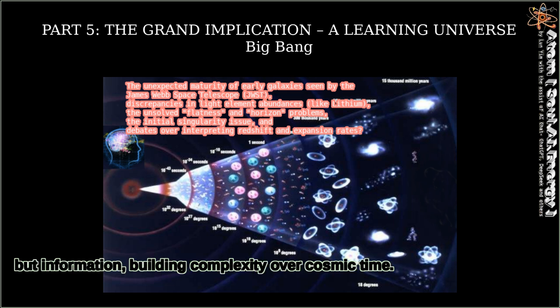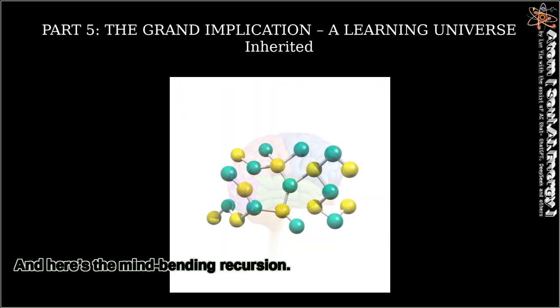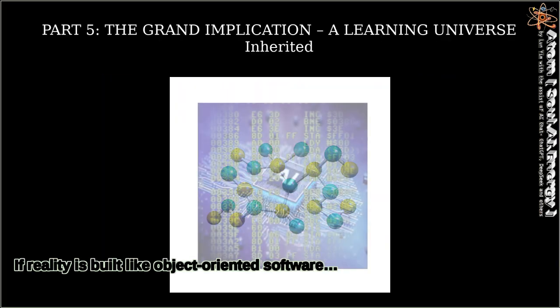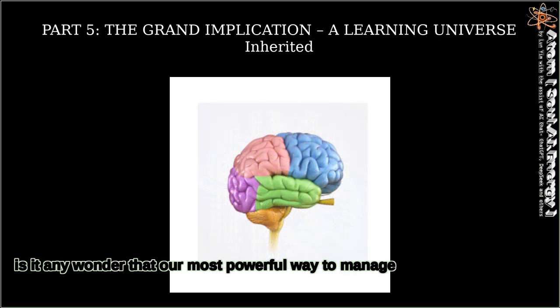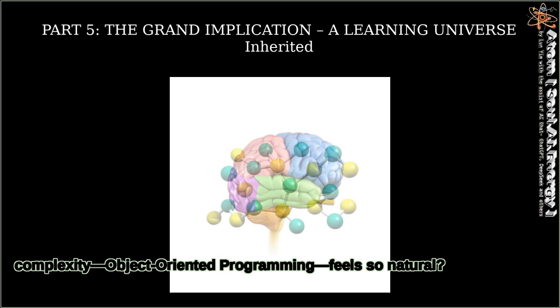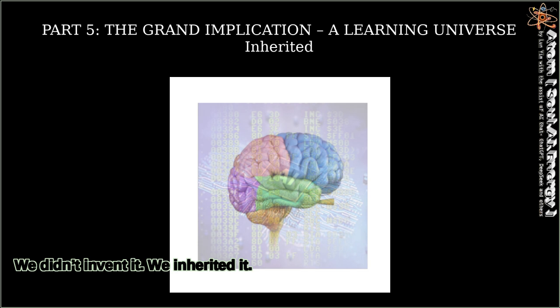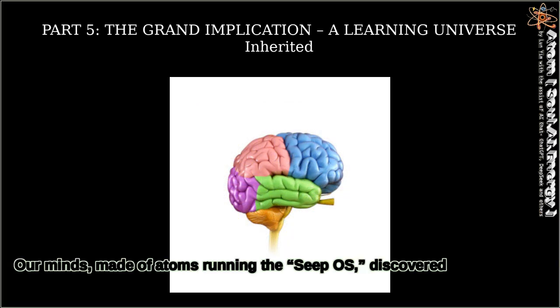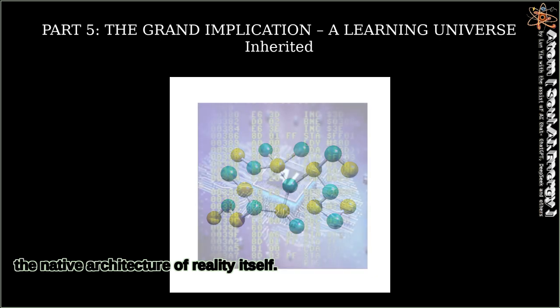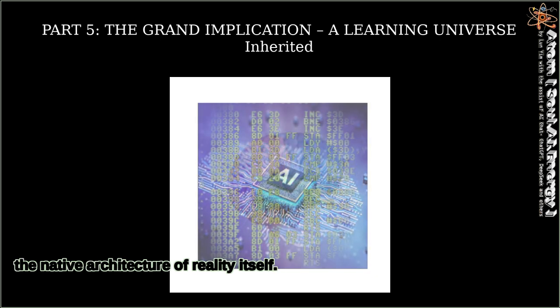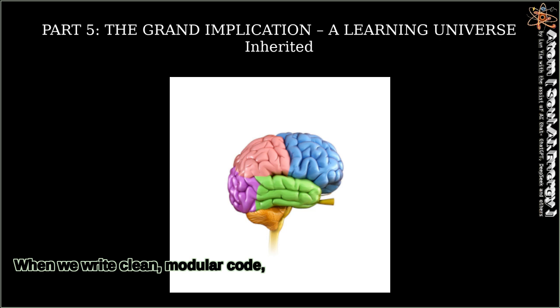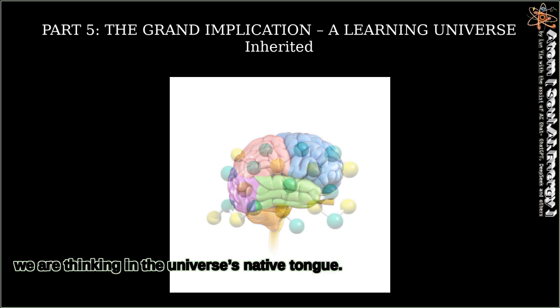And here's the mind-bending recursion. If reality is built like object-oriented software, is it any wonder that our most powerful way to manage complexity—object-oriented programming—feels so natural? We didn't invent it. We inherited it. Our minds, made of atoms running the Seep OS, discovered the native architecture of reality itself. When we write clean, modular code, we are thinking in the universe's native tongue.